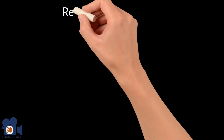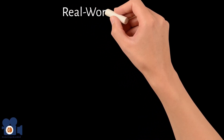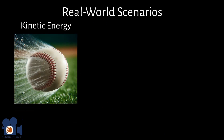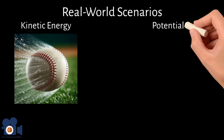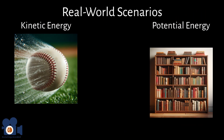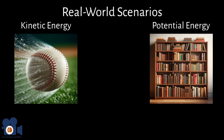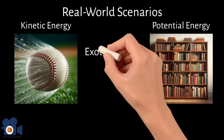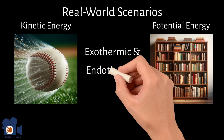Now let's see how this law plays out in real-world scenarios. Remember, energy exists in two main forms: kinetic energy associated with motion and potential energy associated with position. Now let's imagine these energies at play within a system with exothermic and endothermic processes.